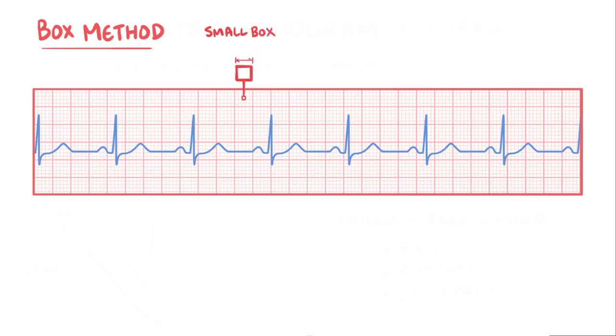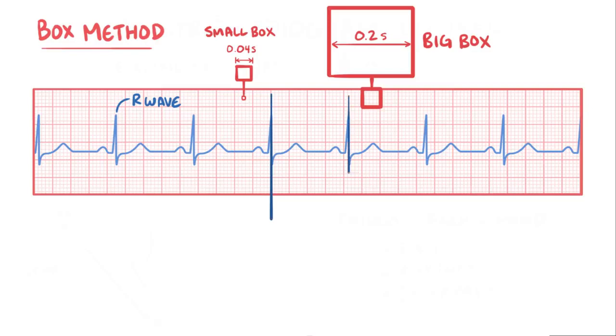Each small box represents 0.04 seconds, and each big box is 5 small boxes, so each big box is 0.2 seconds. So to calculate the heart rate, you can count the number of small boxes between R waves since R waves are tall and pointy and easy to see on lead 2 of an ECG strip.